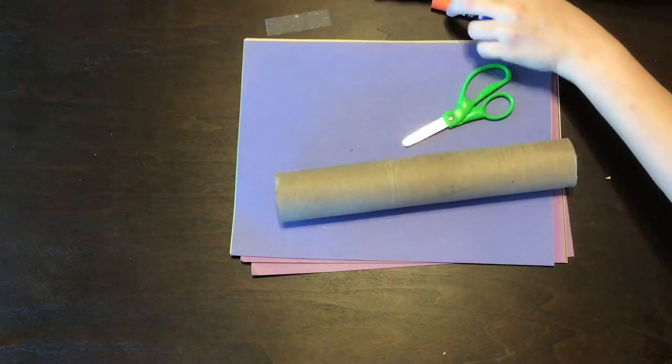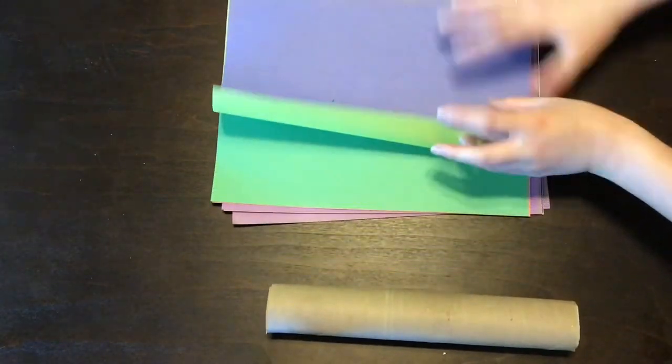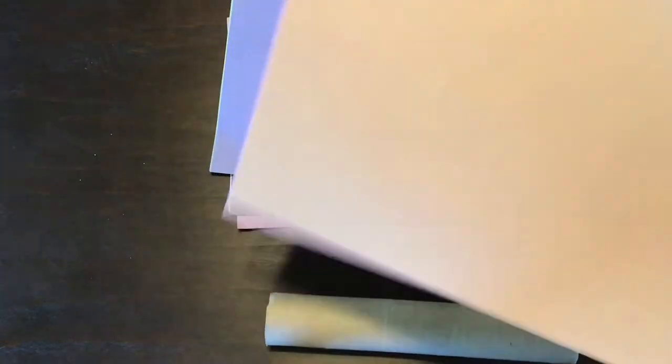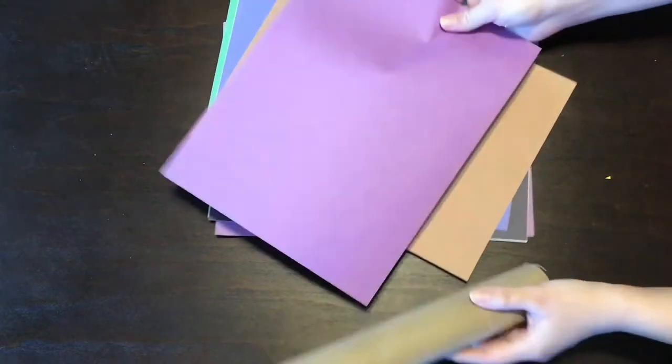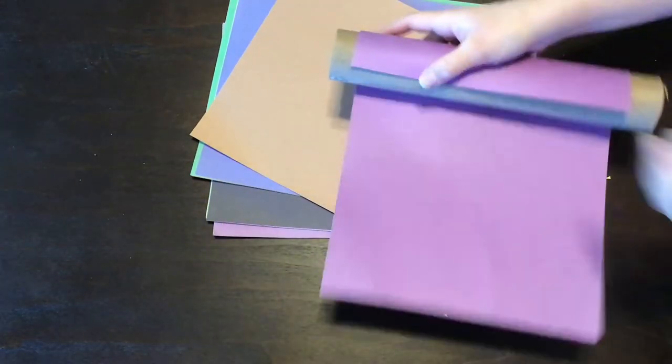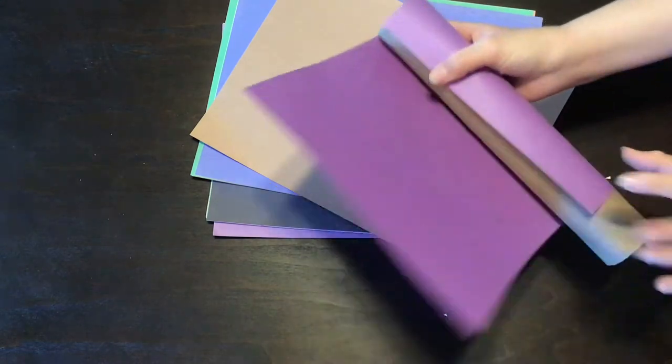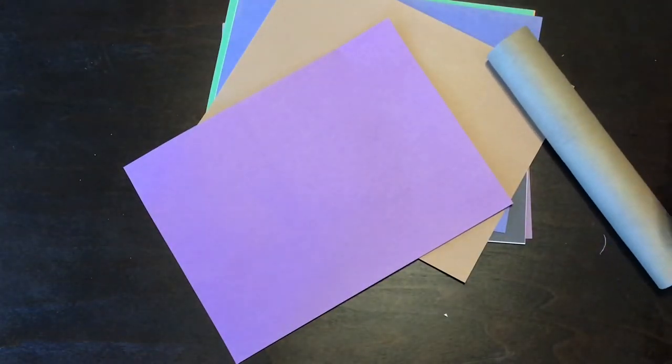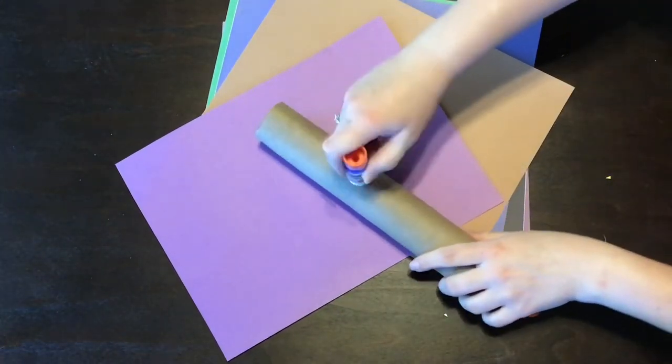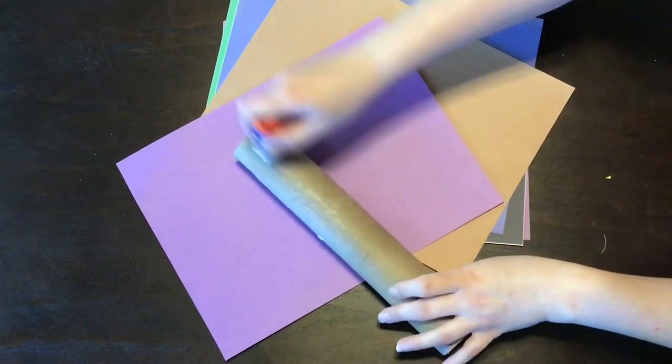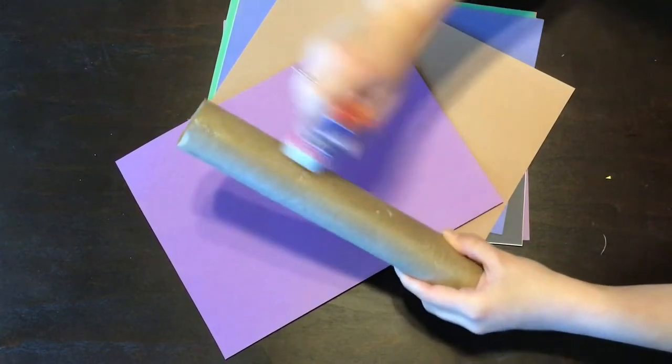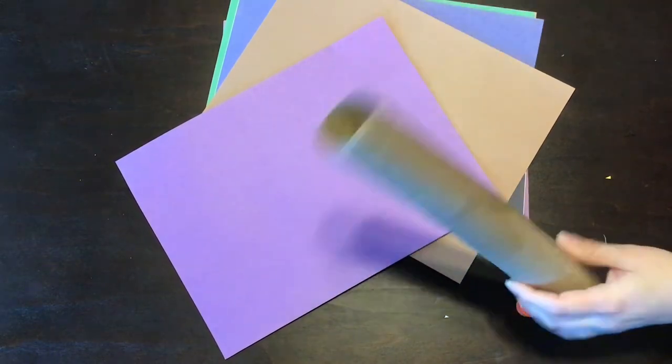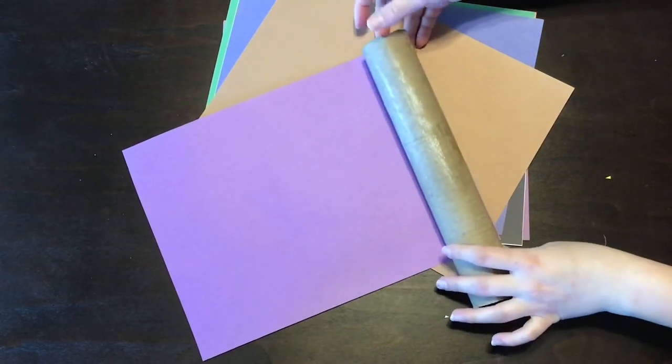Now what I'm gonna do first is I'm going to grab a piece of purple paper, this is my favorite color, and I'm gonna cover my roll with it so that I have a purple base for my rocket ship. So I'll grab my glue and I'll put glue all over my roll.